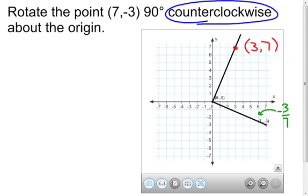I've rotated my point 90 degrees counterclockwise. And my image is going to be right there at 3, 7. So it's one way to do it. You could, like I said, use your protractor and compass and you'd end up with the same exact point.